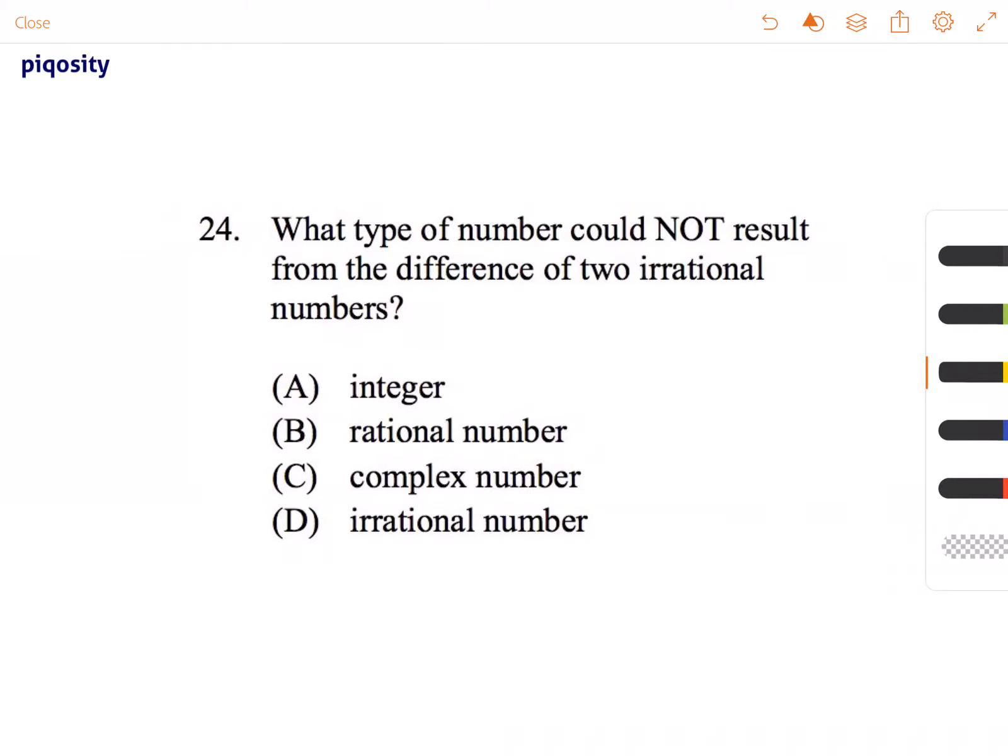This is Stephen and this question is testing your knowledge of different types of numbers. The question is asking, what type of number could not result from the difference of two irrational numbers? Difference meaning subtraction. So we have two numbers subtracted from each other, but they're both irrational.